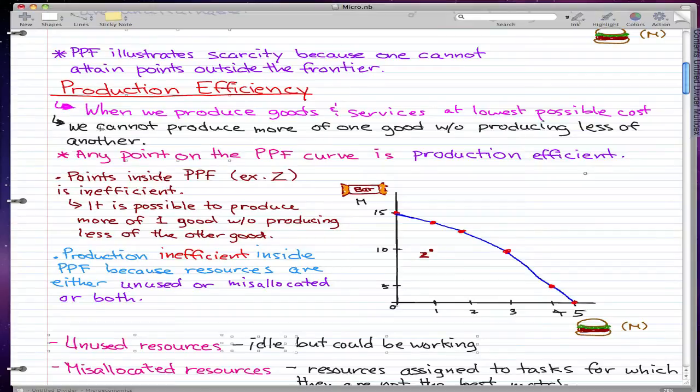It also occurs when we cannot produce more of one good without producing less of another. We will talk more about that, which is called trade-offs, in the next video, but for this video I want to focus on production efficiency.